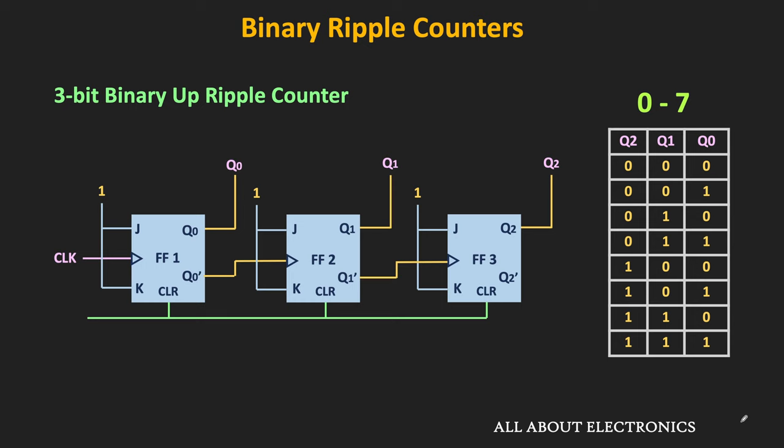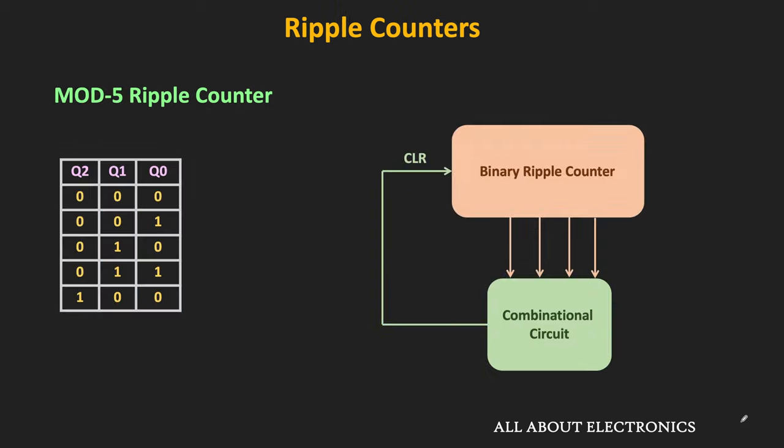But sometimes we also need to design a counter which counts up to a specific value. For example, let's say we want to design a counter which counts from 0 to 4, or in binary, from 000 to 100. This is essentially a modified counter. By using the binary ripple counter along with some additional logic circuit, it is possible to design such ripple counters.